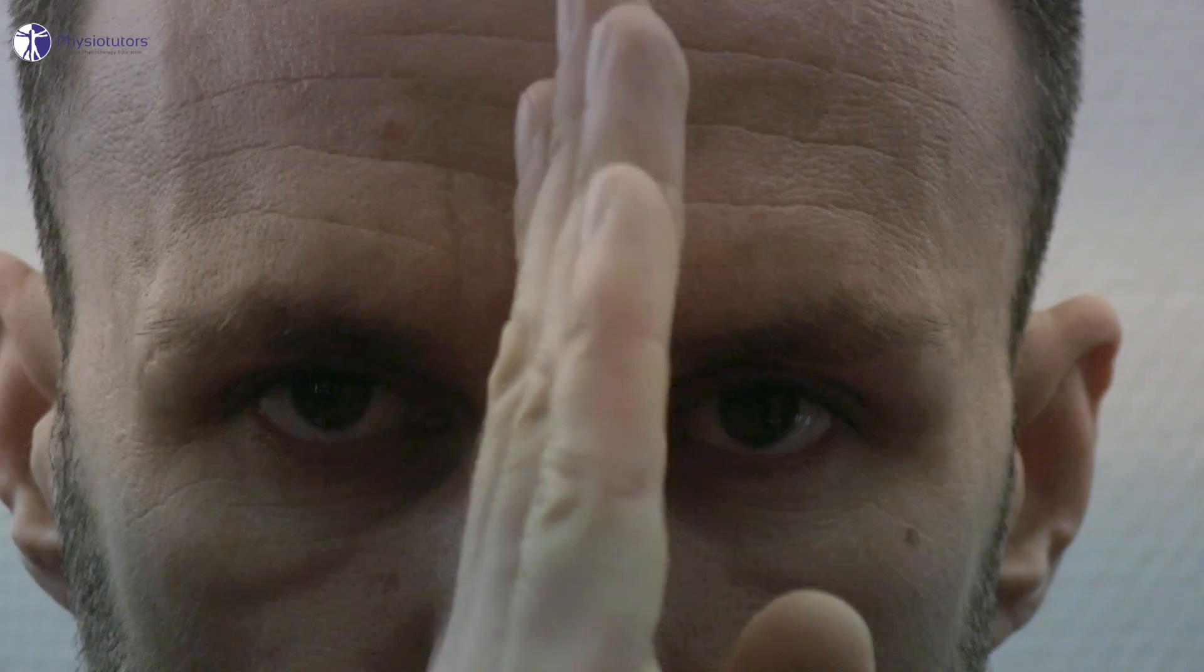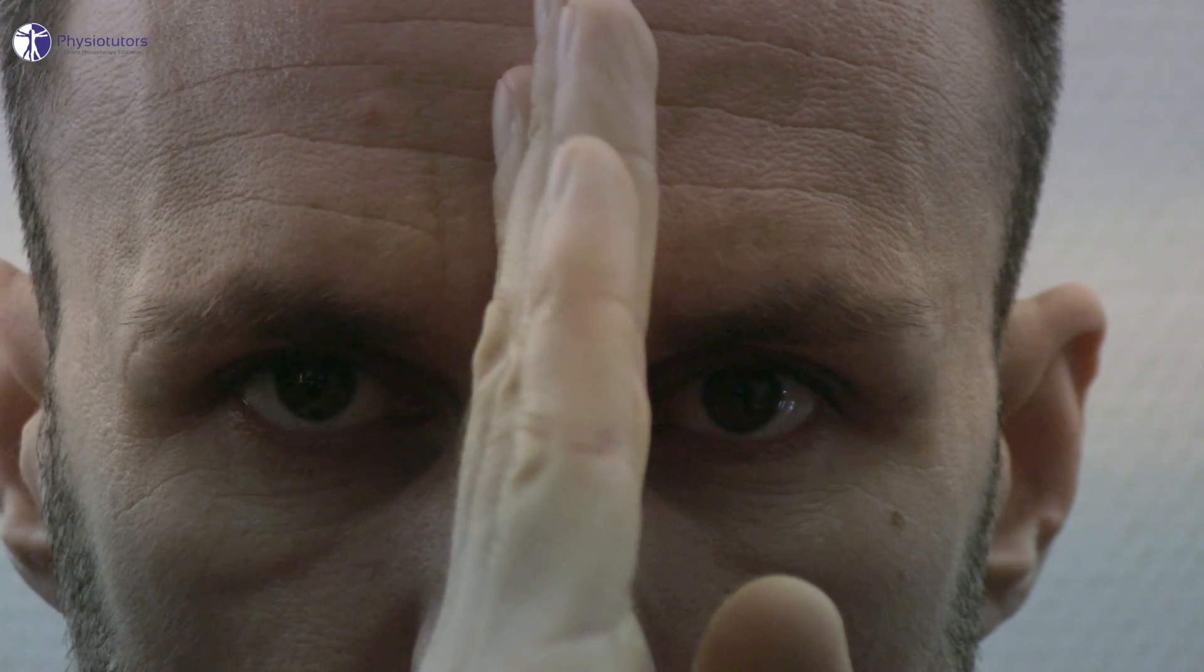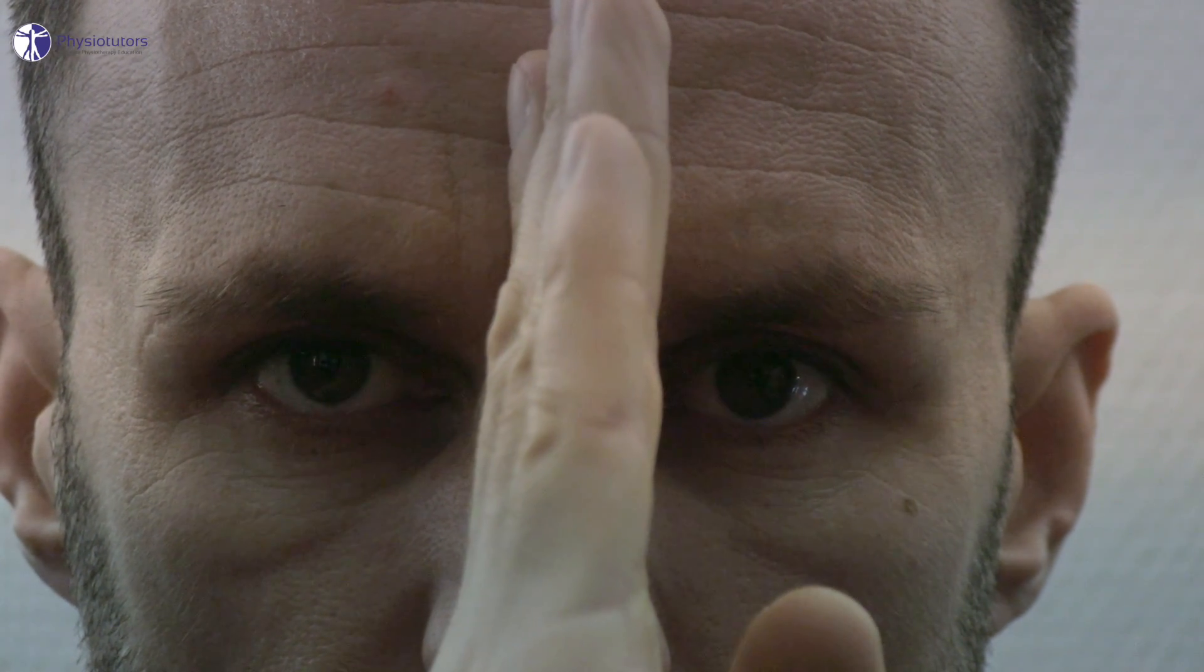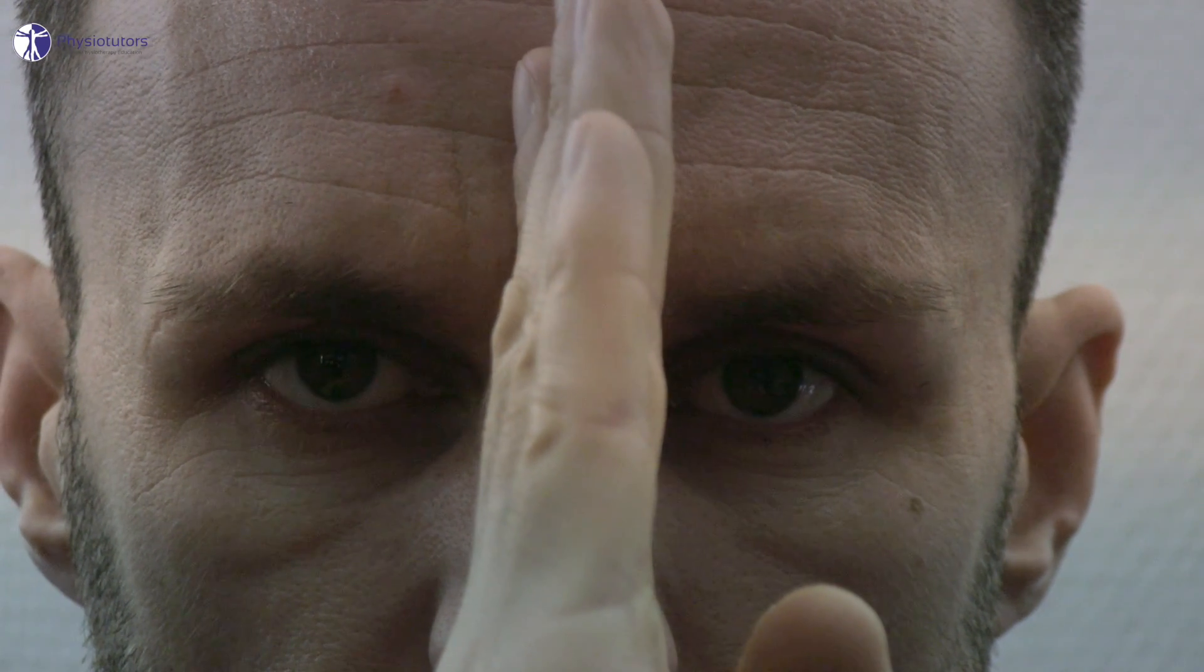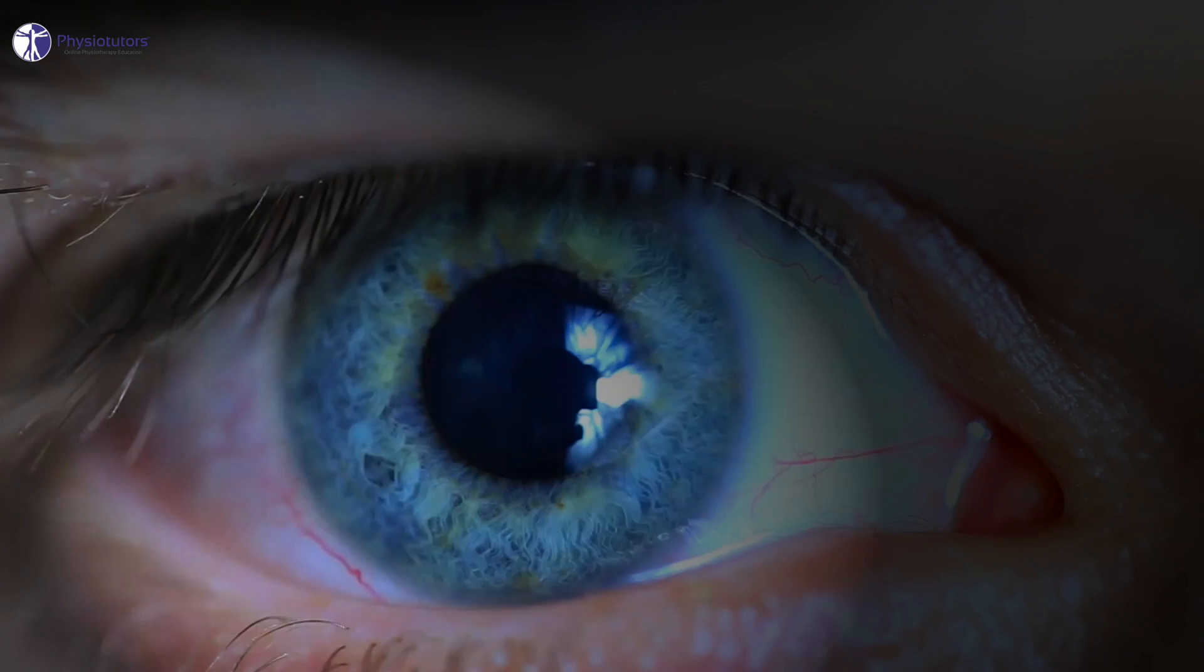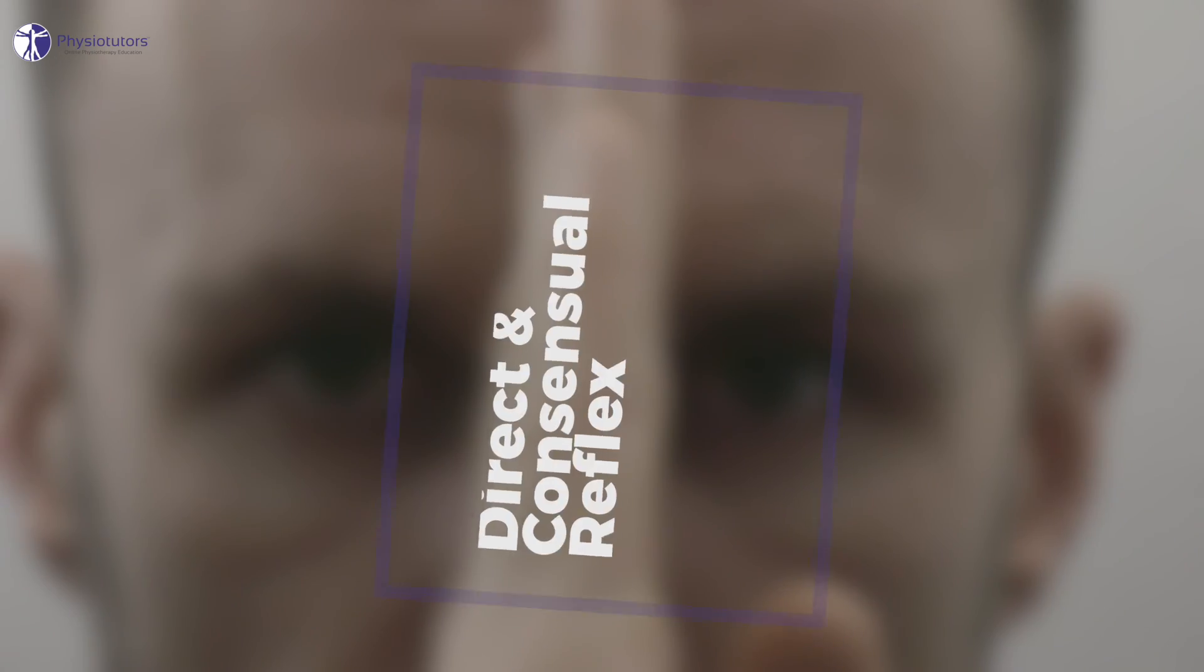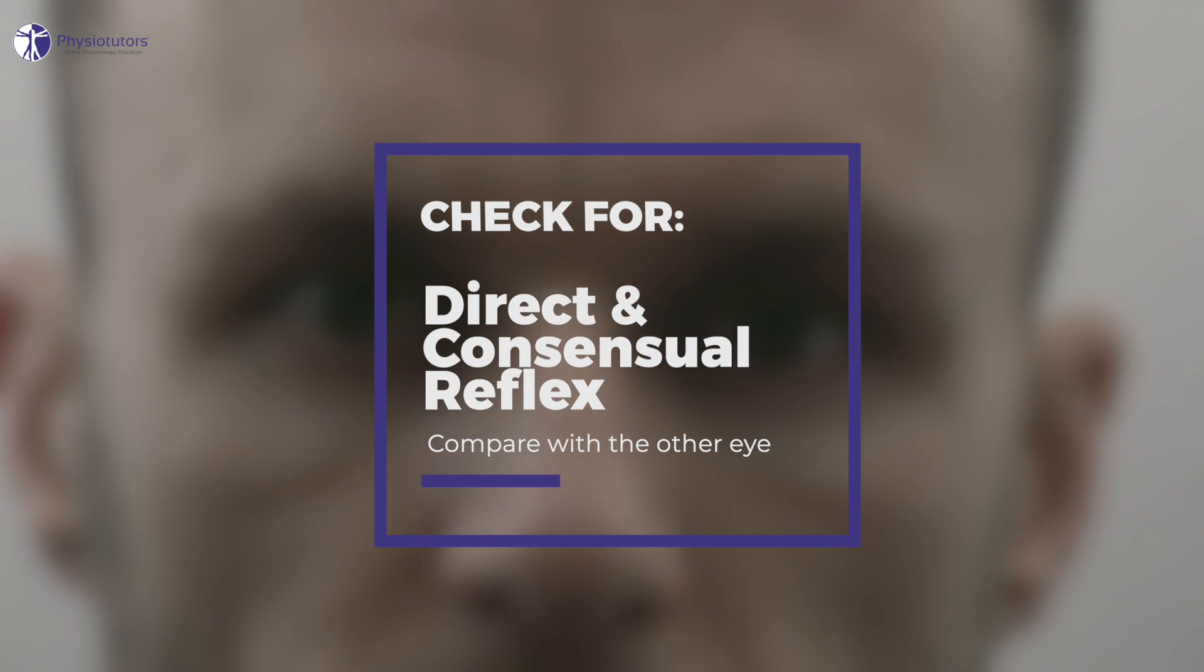To test the reflex function, ask the patient to make a shield between their eyes with one hand. Then use a flashlight to shine light into the pupil and observe for the narrowing of the patient's pupils in both eyes. Check for a direct and consensual reflex.